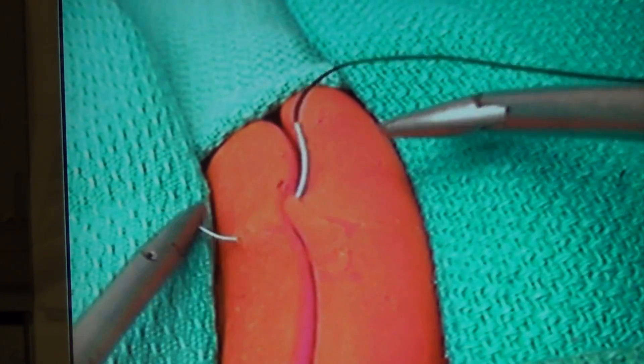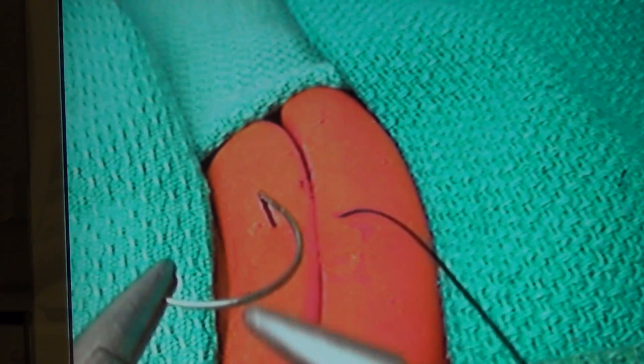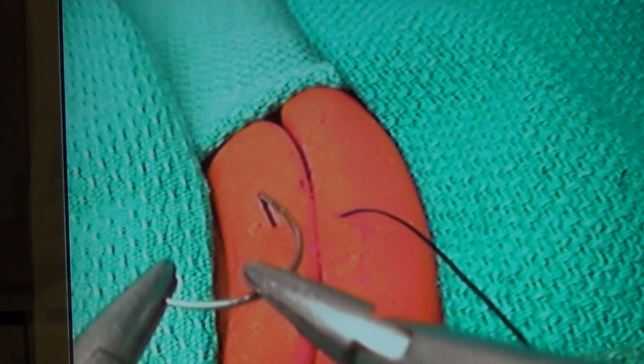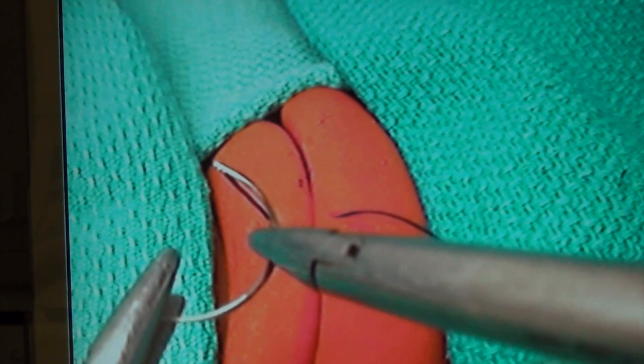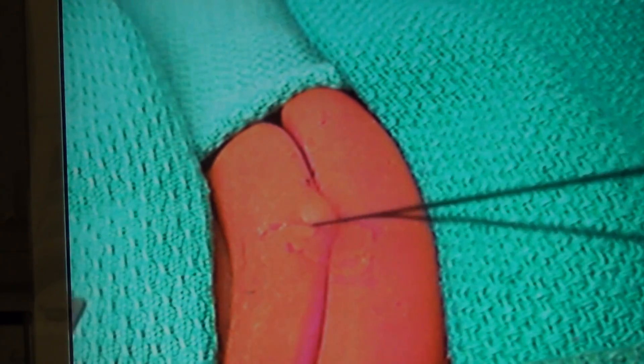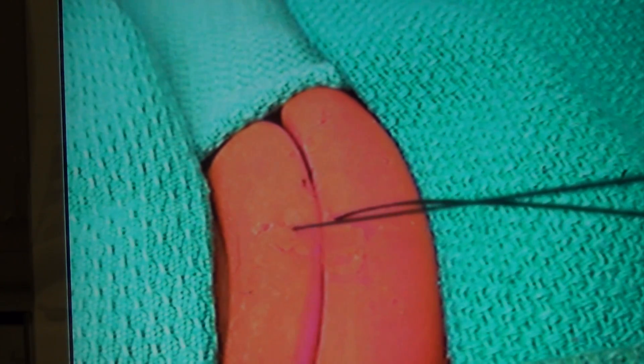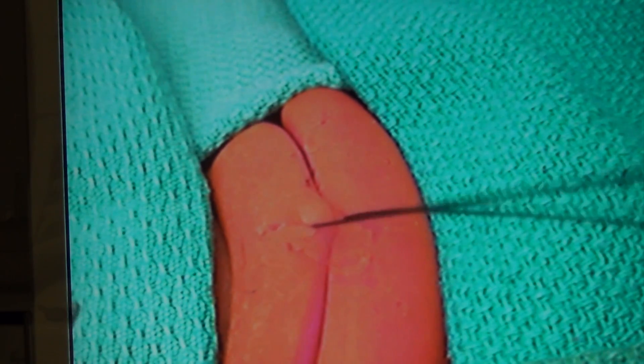Place a suture into the tissue. Keep the suture length long. Leave the tail end of the suture outside of the port. Bring the needle end of the suture out of the port opening. Cut the needle off the suture.